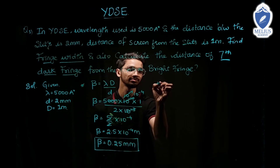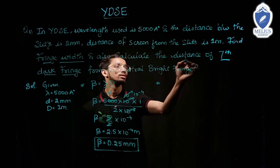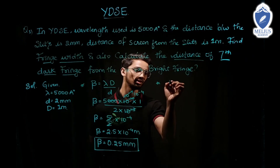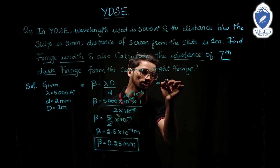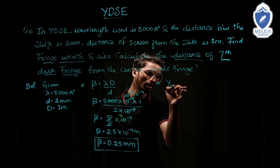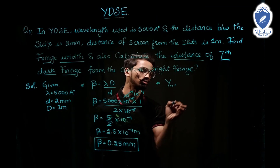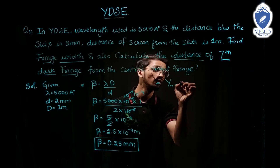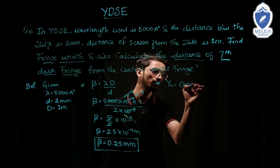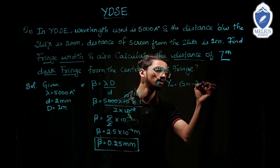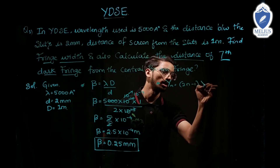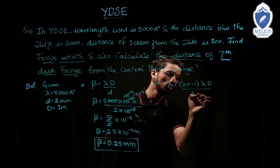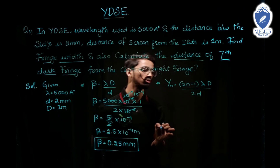The next thing to find is the distance of the 7th dark fringe. The formula for the position of a dark fringe is: yn equals (2n minus 1) times lambda times capital D divided by 2 times small d.